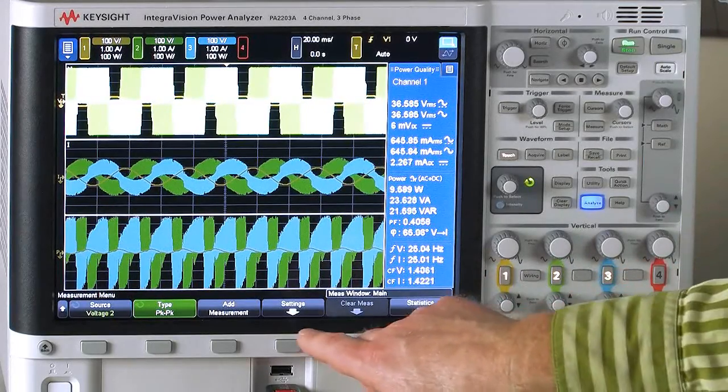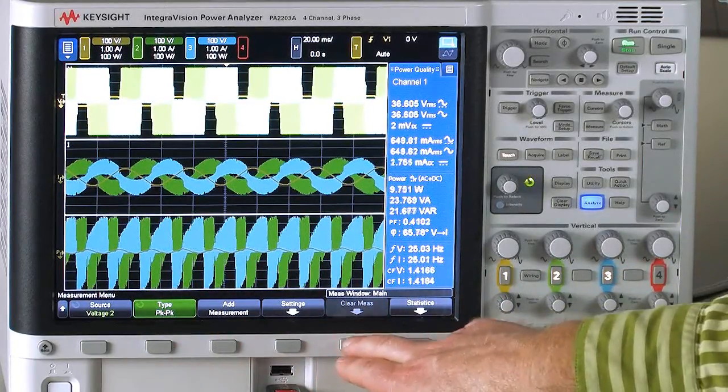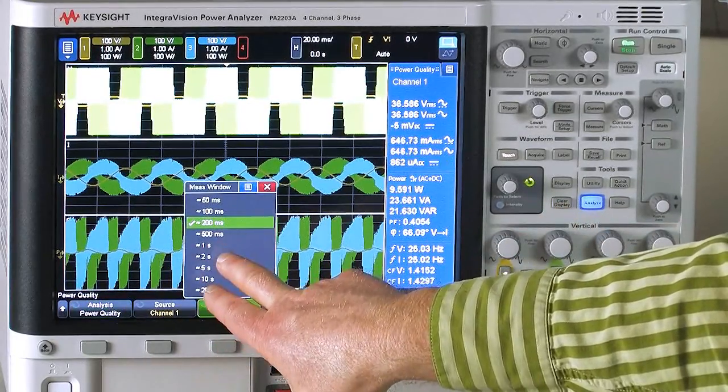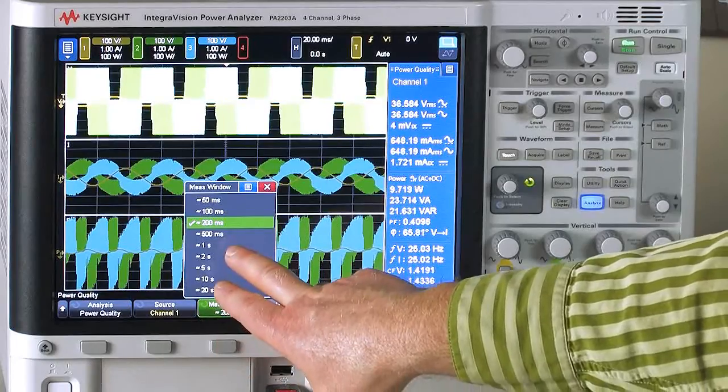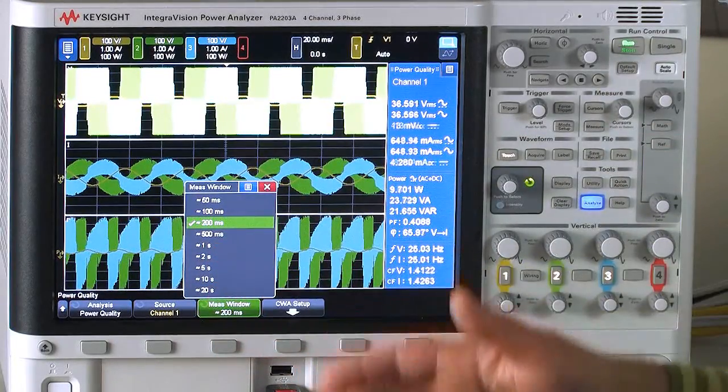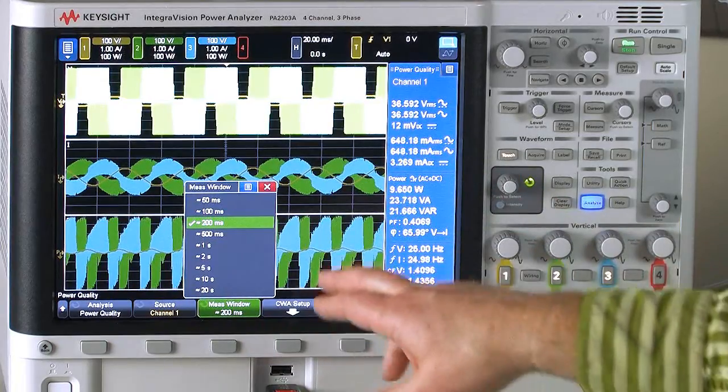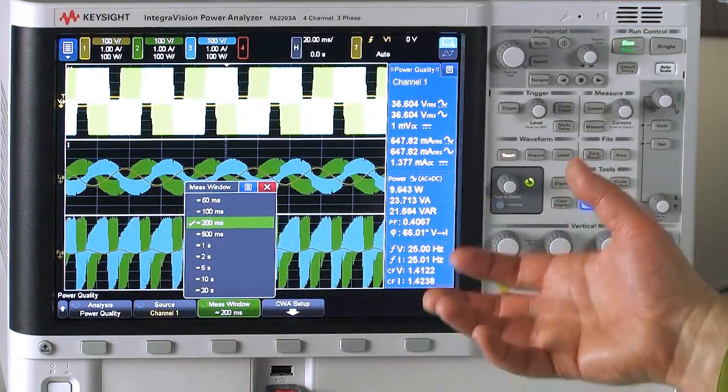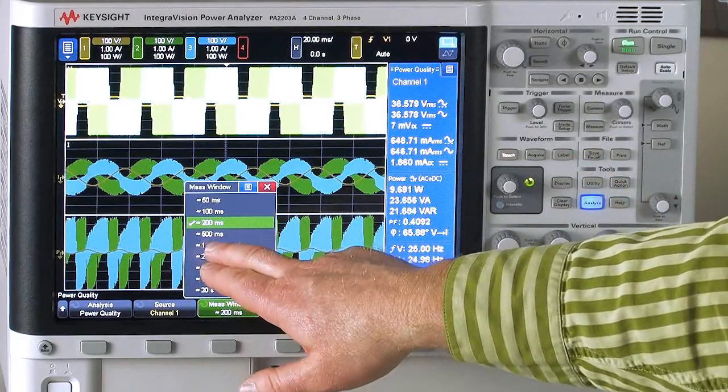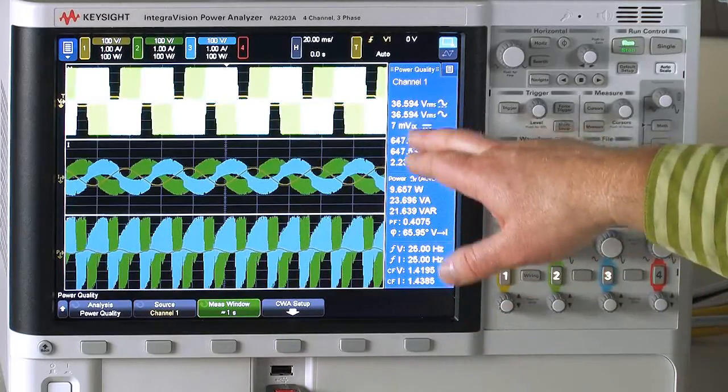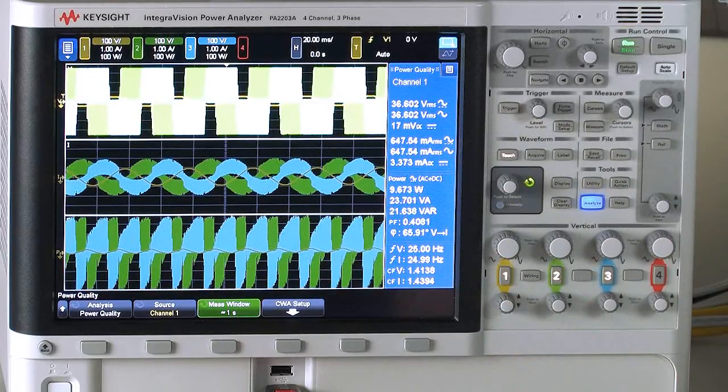So another thing that I can define here is I can change the window of this analysis. Right now it's at 200 milliseconds. That's okay for a 60 hertz signal. As you go lower and lower in frequency, you need a longer window to get a good measurement to average over a number of cycles. And so I'm going to change that to a one-second window and that should get me a very nice, stable measurement there.